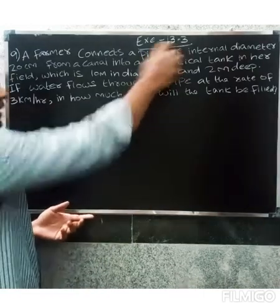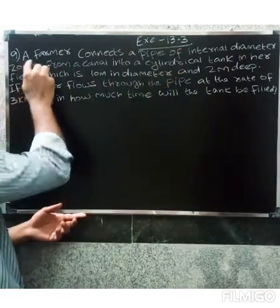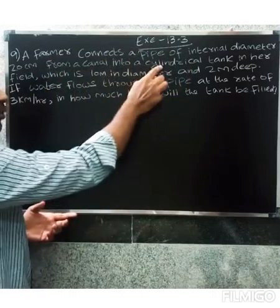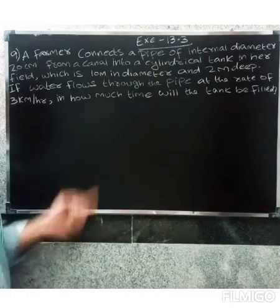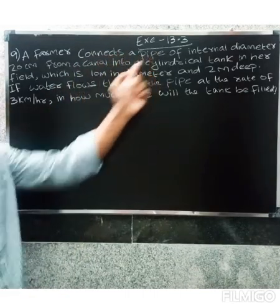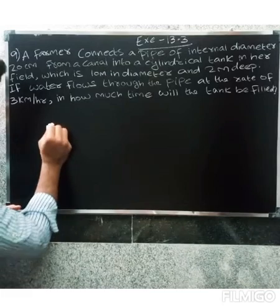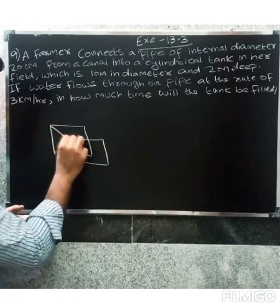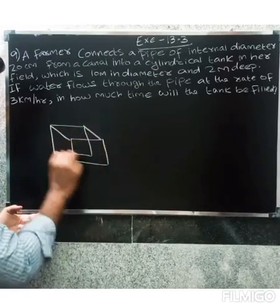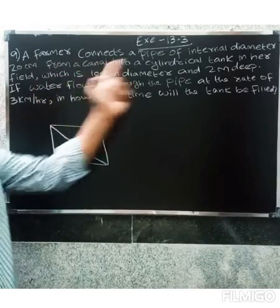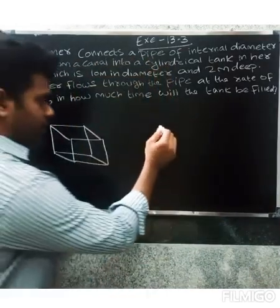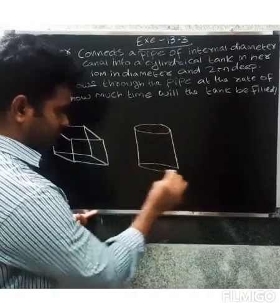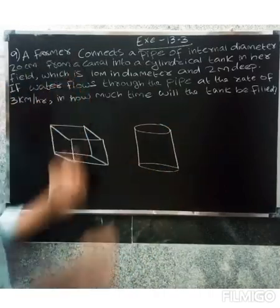Welcome friends. This is question number 9. A farmer connects a pipe of internal diameter 20 centimeters from a channel into a cylindrical tank. So we have a canal connected to a cylindrical tank.